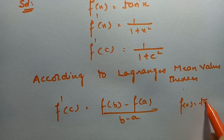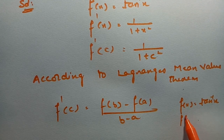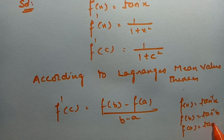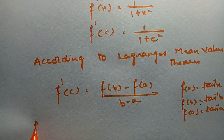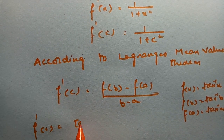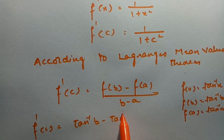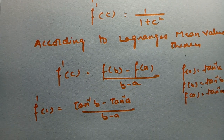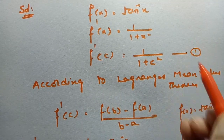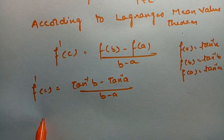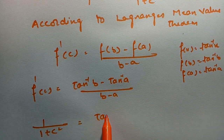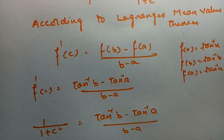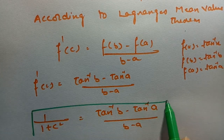Here f(x) = tan⁻¹(x), so f(b) = tan⁻¹(b) and f(a) = tan⁻¹(a). Substituting, f'(c) = [tan⁻¹(b) - tan⁻¹(a)] / (b - a). Therefore, 1/(1+c²) = [tan⁻¹(b) - tan⁻¹(a)] / (b - a). This is equation 2.